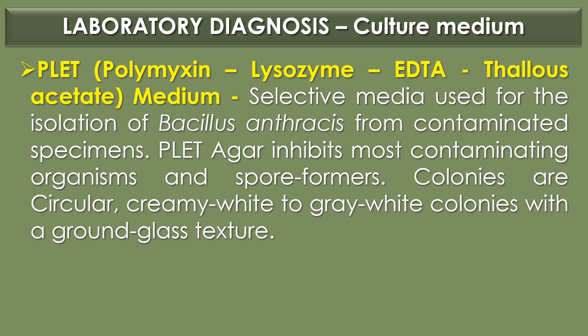PLET agar inhibits most contaminating organisms and spore formers. The colonies of Bacillus anthracis on PLET agar are circular, creamy white to gray-white with a ground glass texture.